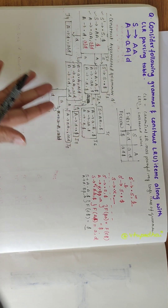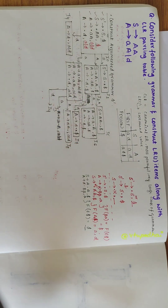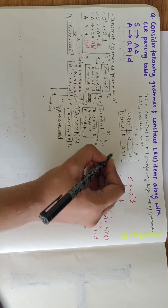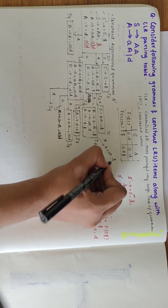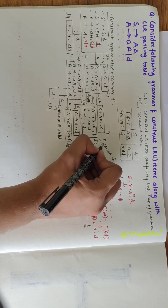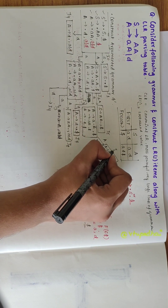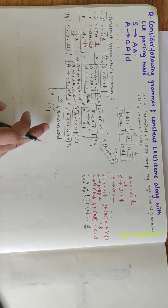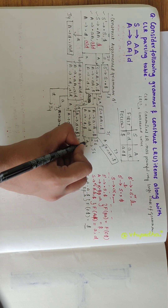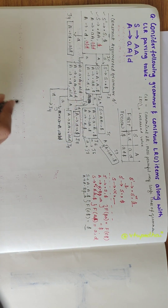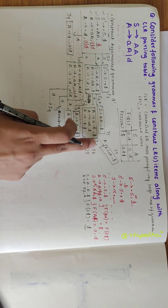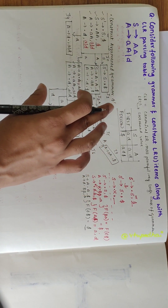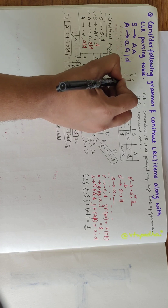Checking I5: cannot expand further. Checking I6: over capital A, I would get A derives Aa dot, $, which I name I9. Over small a, A derives a dot A, $ is similar to I6, so I write I6. Over d, I would get I7. I7, I8, I9 cannot be expanded further. I have now constructed the augmented grammar for the given grammar G.